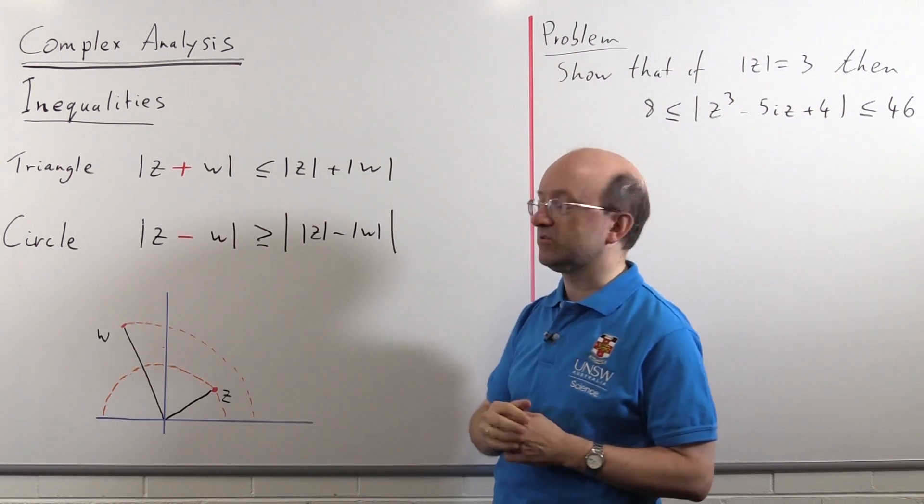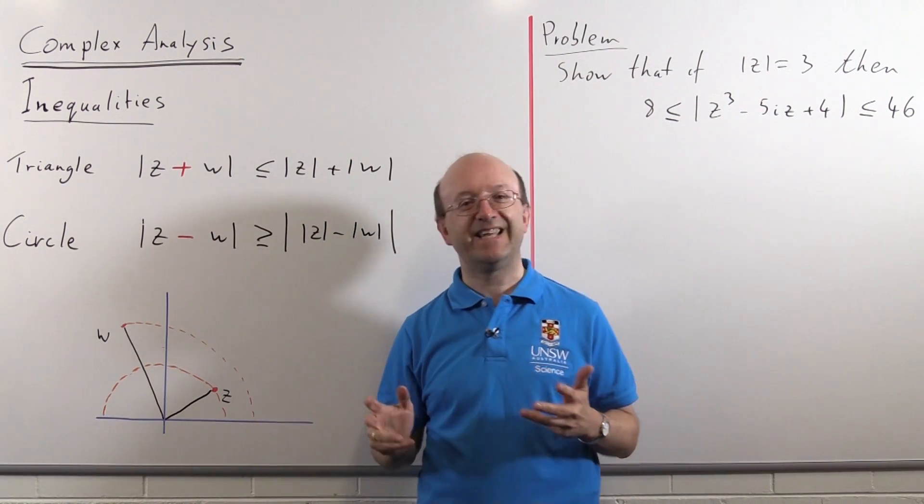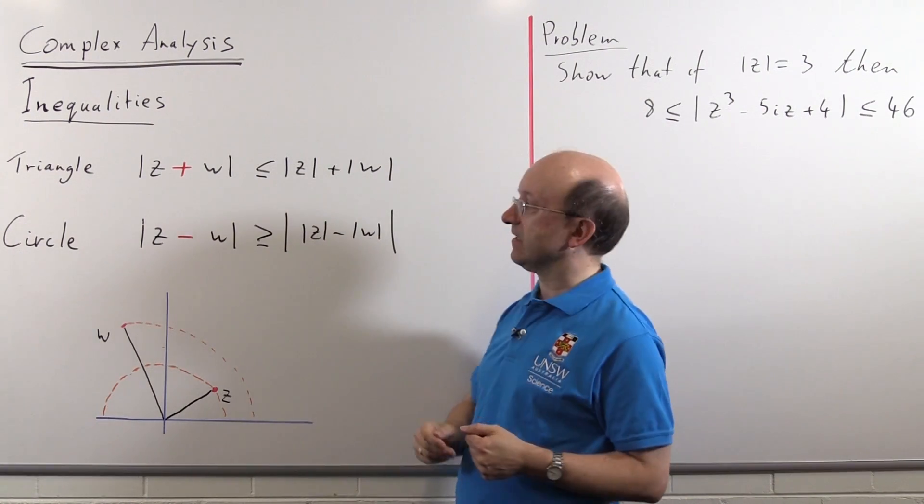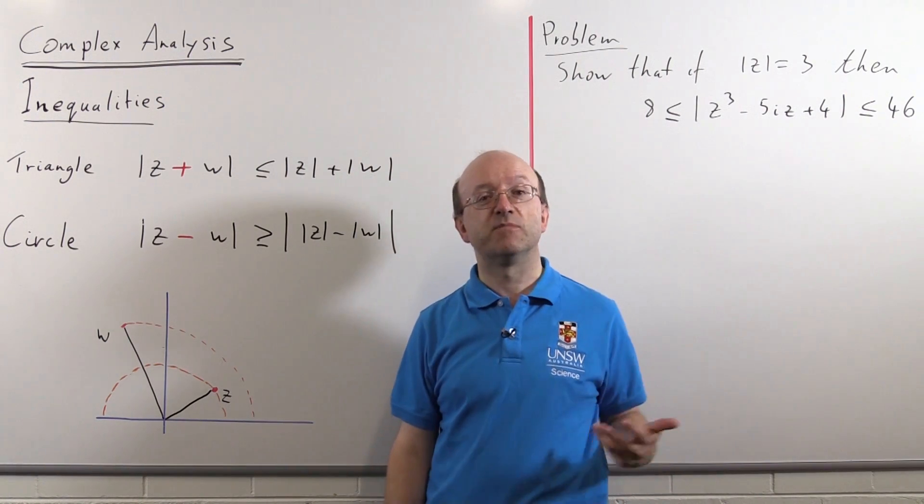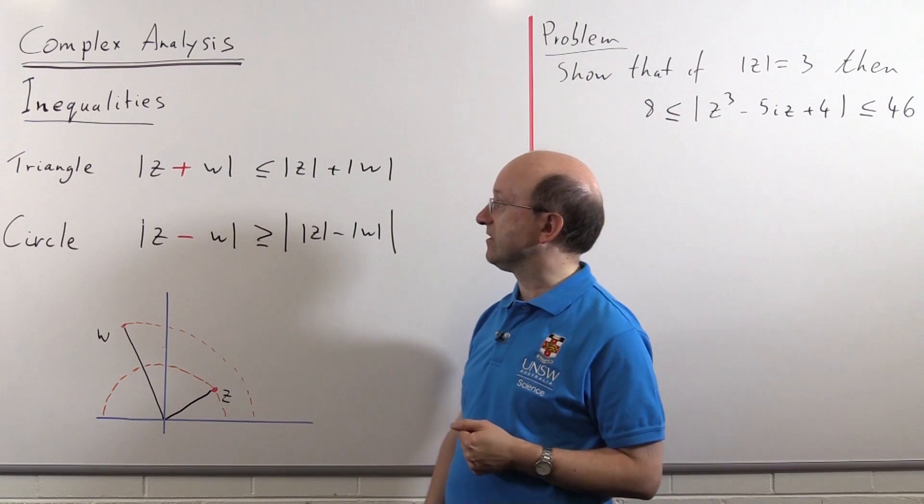Modulus of z plus w is less than or equal to mod z plus mod w. Now notice I've written the plus sign in red here, that's to indicate that although it's normally remembered with a plus sign, that plus sign there can be a minus sign because mod of w is the same as mod of minus w, so you can just change this one on this sign.